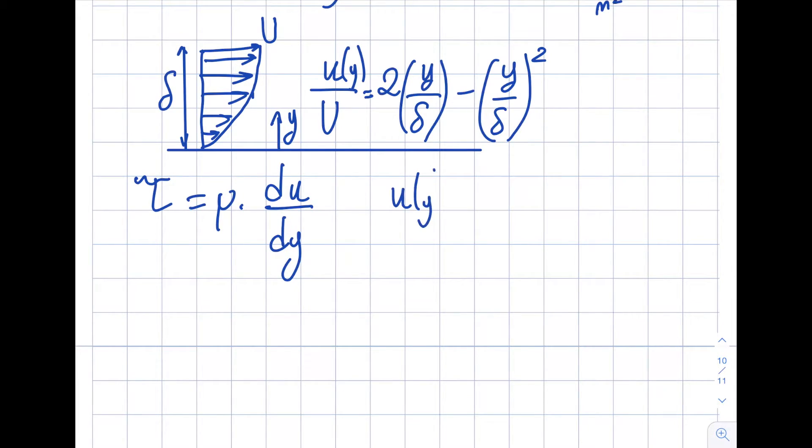I will write it this way: u of y will be 2 y over delta minus y over delta square times the capital U. I simply moved capital U from the left hand side of the equation to the right hand side.